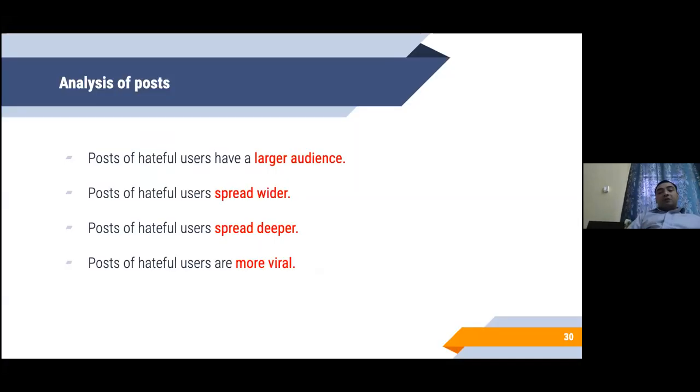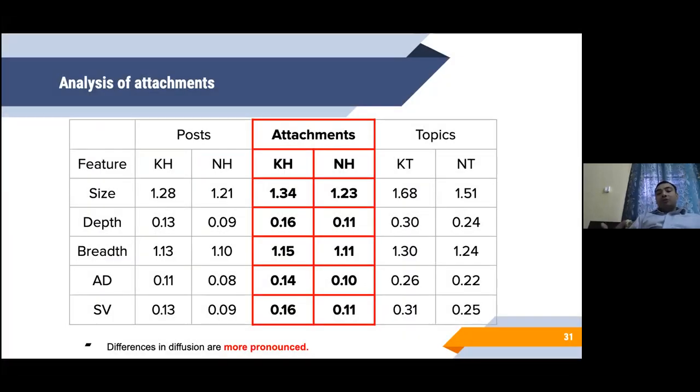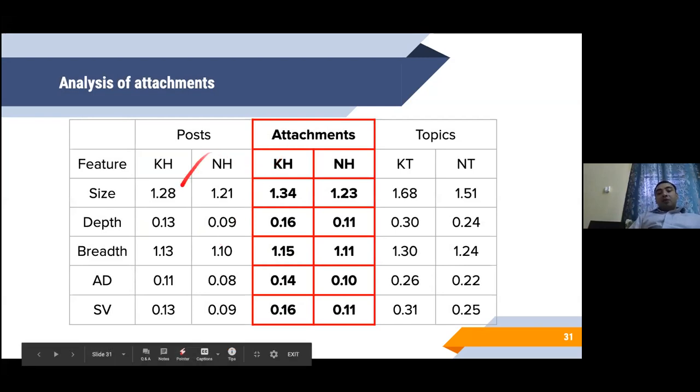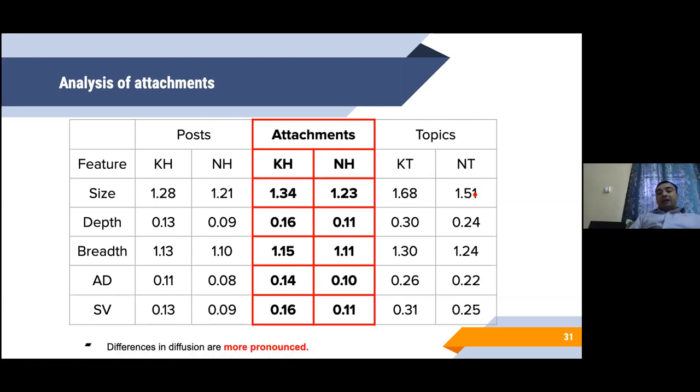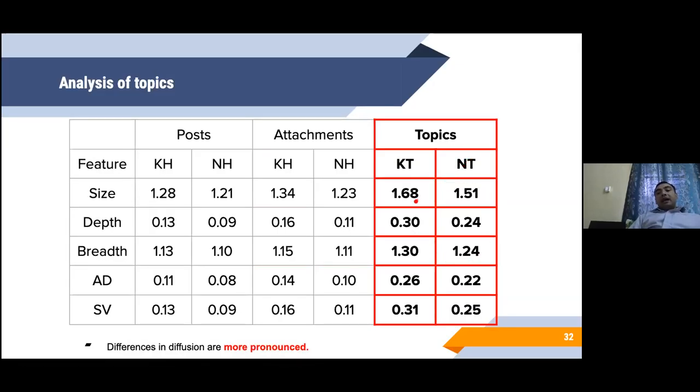The observations pointwise are as follows: posts of hateful users reach a larger audience, they spread wider, they spread deeper into the network, and they are typically more viral. This difference gets more pronounced when you look at multimodal messages. When you include the multimodal messages, the differences get more pronounced. So is the case when you study across different topics under which the KH and NH cascades are built.